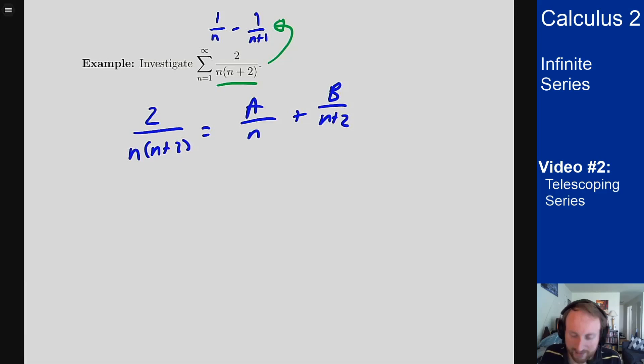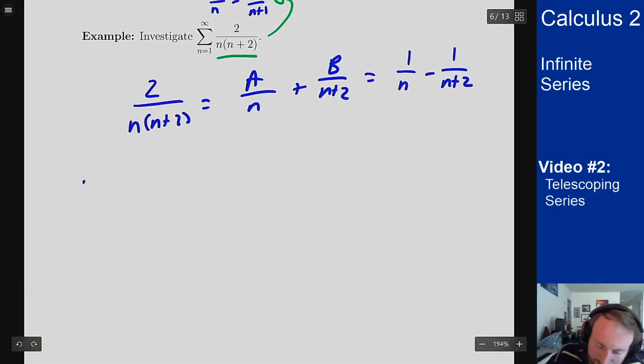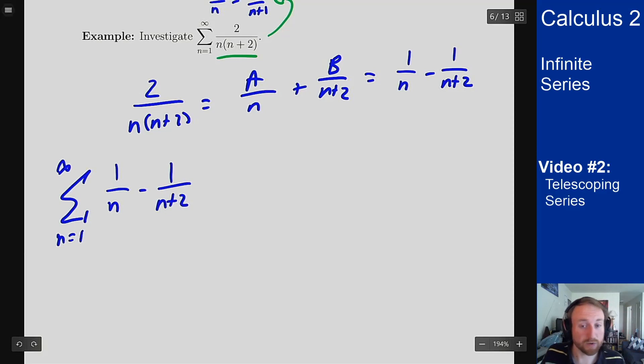You can solve this out, and what you end up getting here is this should be one over N minus one over N plus two. It's going to give me a two on top. So instead, now we're looking at the sum from N equals one to infinity of one over N minus one over N plus two, because those are equivalent expressions.